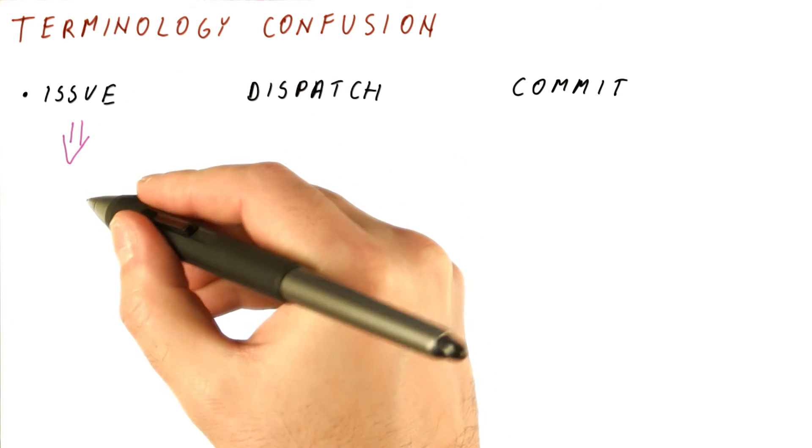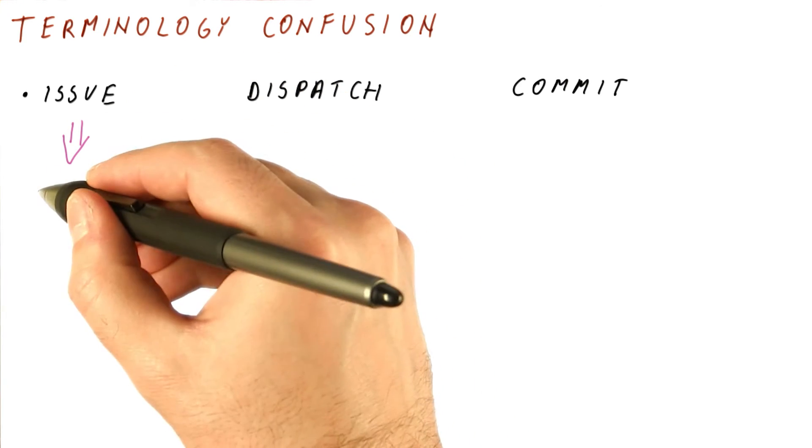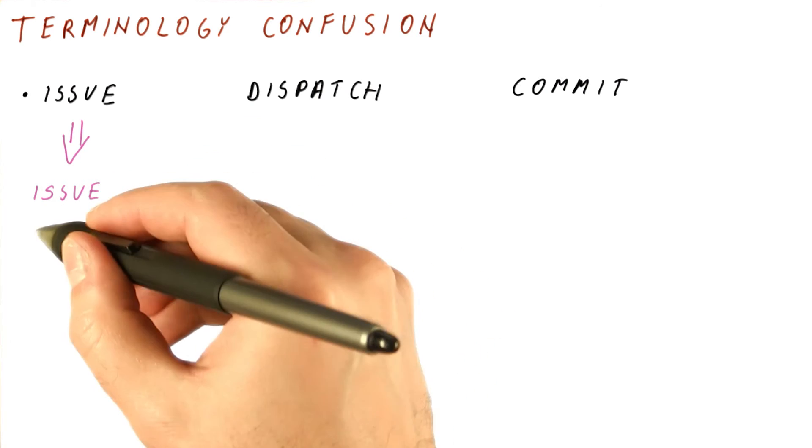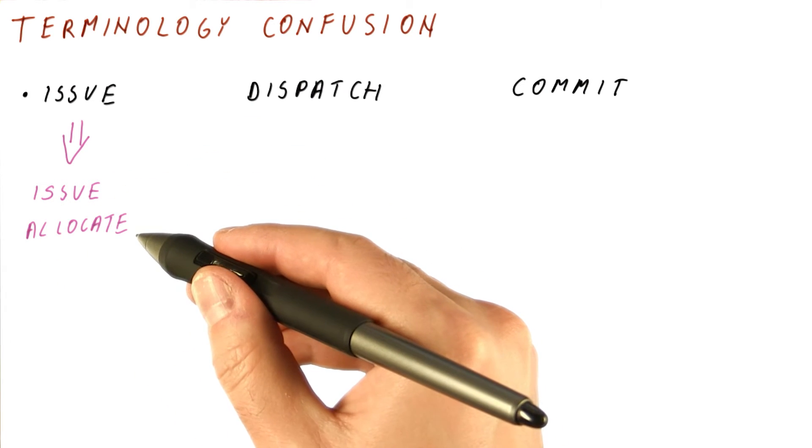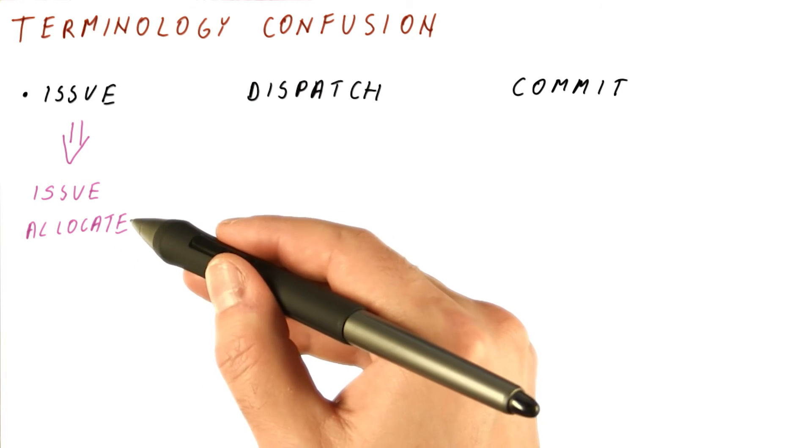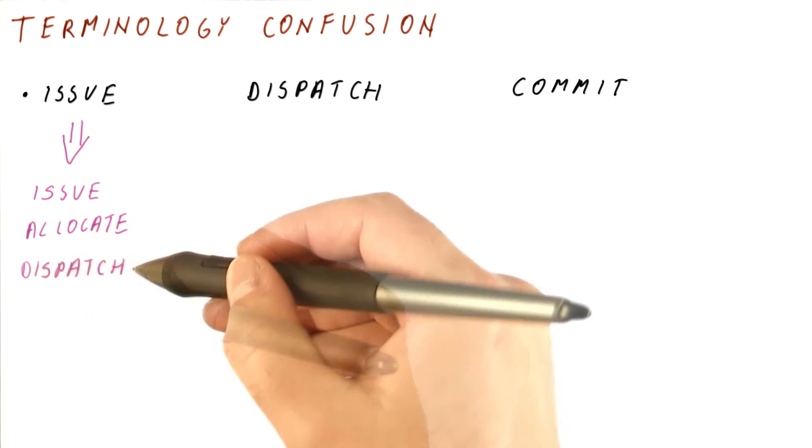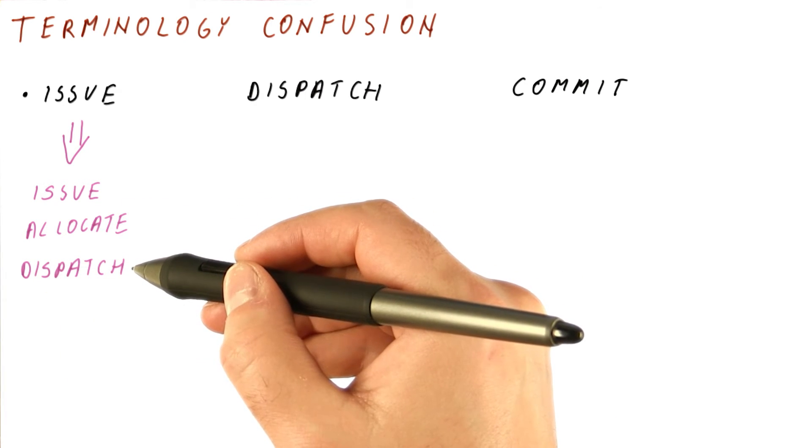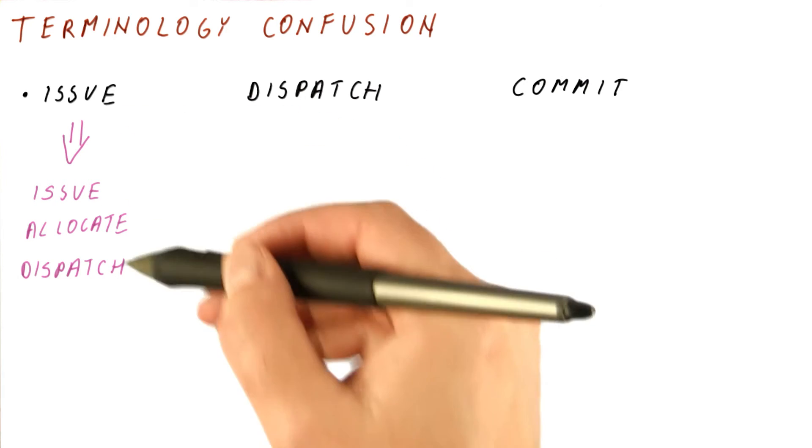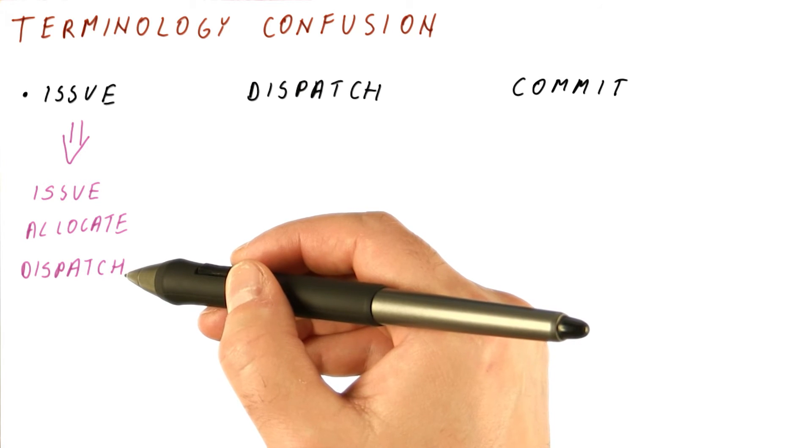However, some companies and some of the papers will, for issue, use the term not only issue but also allocate, because this is when we allocate resources for the instruction. We allocate a reservation station and so on. They're going to call this allocate instead of issue. And to confuse things even further, some call the issue part dispatch. So we dispatch the instruction to reservation stations and the ROB entries.